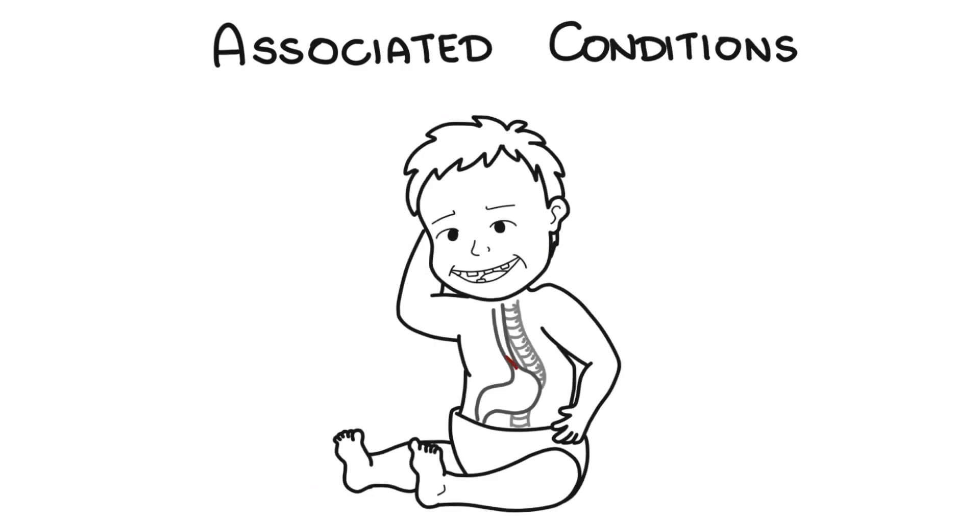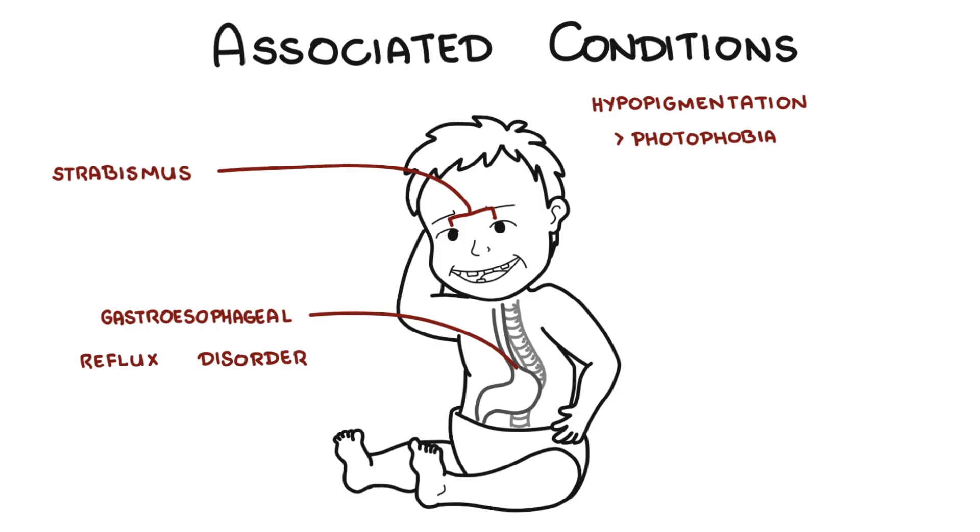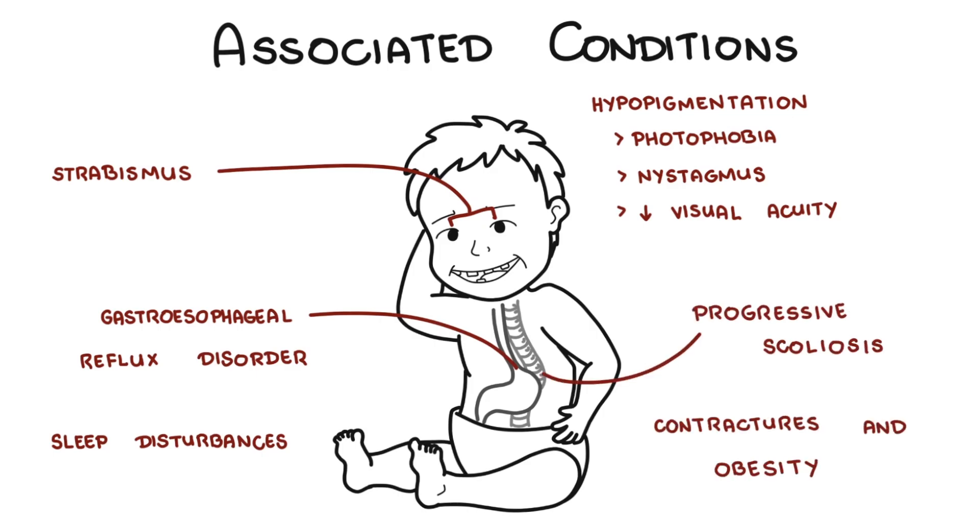There are associated complications of Angelman syndrome, and this includes constipation or gastroesophageal reflux disorder, strabismus, hypopigmentation causing photophobia, nystagmus and decreased visual acuity, sleep disturbances, progressive scoliosis, and contractures and obesity later in life.